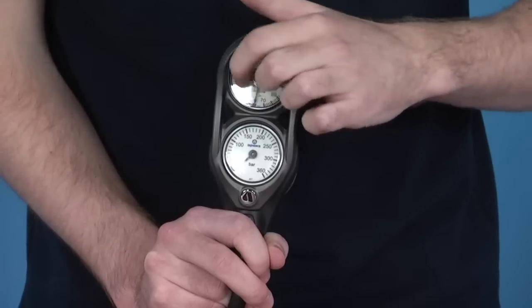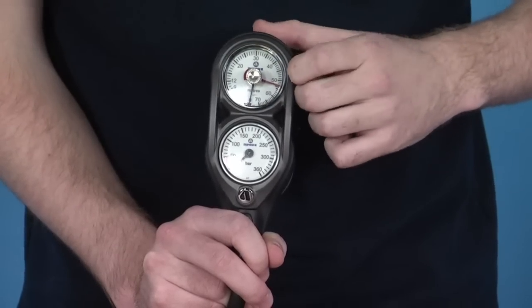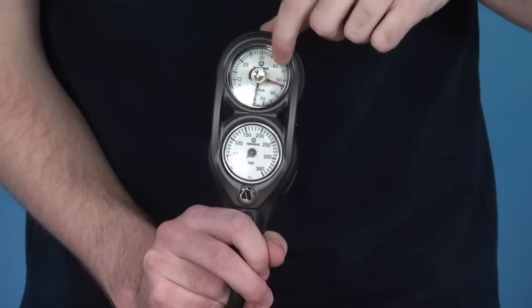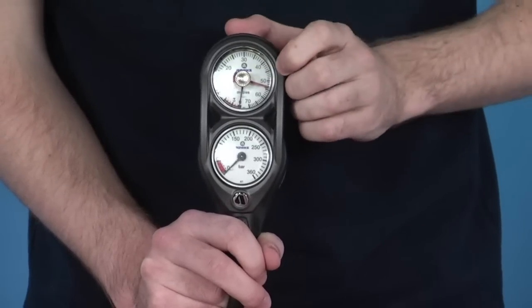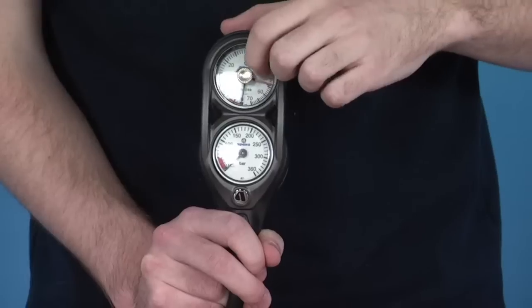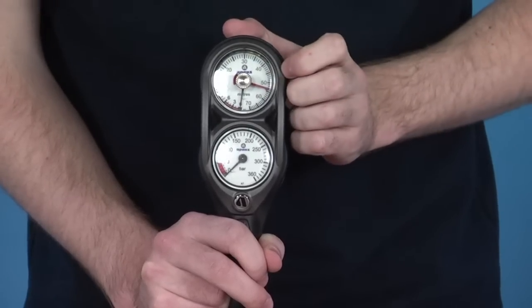Depth gauge at the top as well, which runs from 0 to 70 metres. You also notice a separate needle, which is just above the 50 mark at the moment as a maximum depth indicator, which stays on your maximum depth, even if you're no longer at that depth.